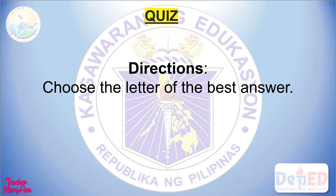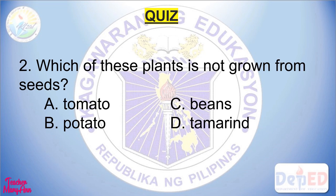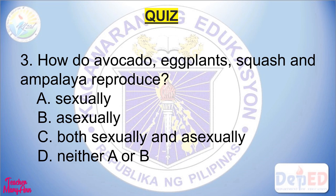Okay, so it's quiz time — choose the letter of the best answer. Number one: which of the following plants are propagated by suckers? A) banana, B) rose, C) katakataka, D) malunggay. Write your answer on your paper. Number two: which of these plants is not grown from seeds? A) tomato, B) potato, C) beans, D) tamarind.